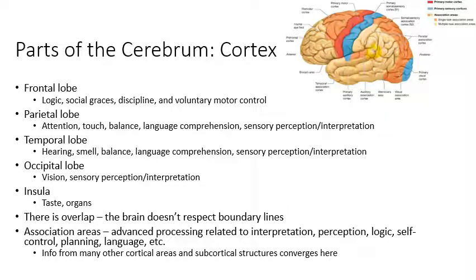Wernicke's area extends a little bit down into the temporal lobe, so both the temporal and parietal lobes are responsible for language comprehension. The occipital lobe is at the back of the brain and is all about vision — it contains your primary visual cortex, where visual information first arrives from your eyes. The occipital lobe converts raw data from your eyes into an actual image you can perceive, and then that information goes out into the parietal and temporal lobes so that objects in the image can be identified.